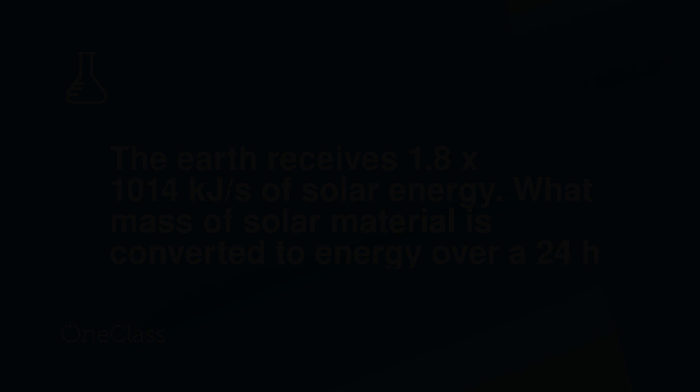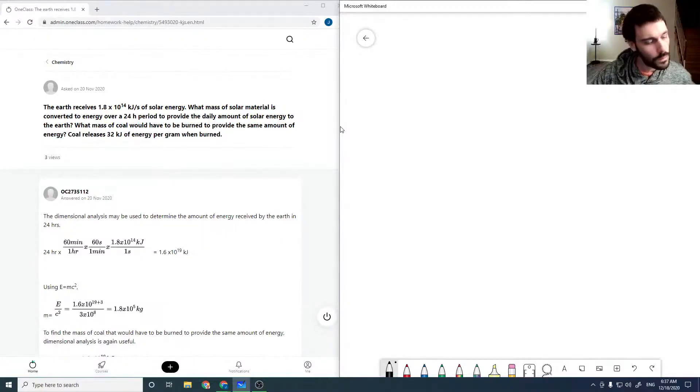Okay, so here's kind of a unit rearrangement question. The Earth receives 1.8 times 10 to the 14 kilojoules per second of energy. What mass of solar material is converted to energy over a 24-hour period to provide this daily amount of solar energy?